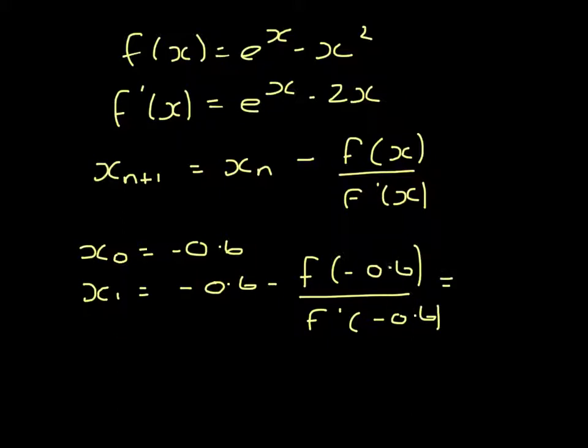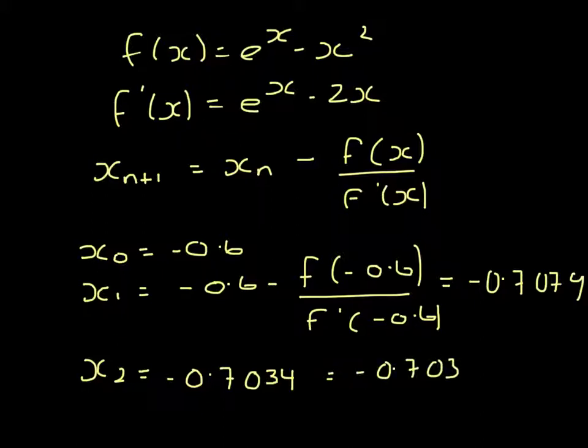I'm going to substitute that into the equation again to get x_2. We get negative 0.7034, which to 3 significant figures is negative 0.703.